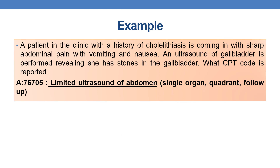Let us discuss an example. A patient with a history of cholelithiasis presents with sharp abdominal pain, vomiting, and nausea. An ultrasound of the gallbladder is performed, revealing stones. What CPT code is reported? The answer is 76705, because the ultrasound covers only the gallbladder, which is one element of the abdomen — a single organ. Therefore, the limited code 76705 is assigned.